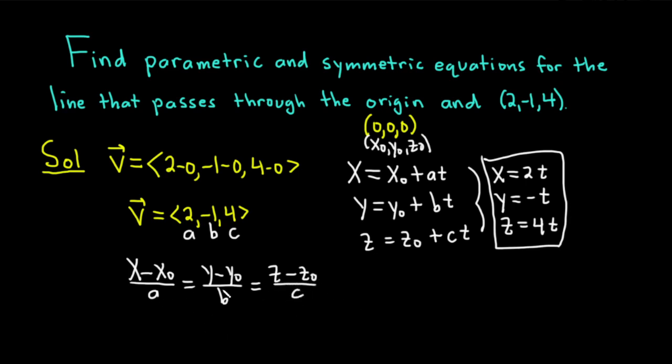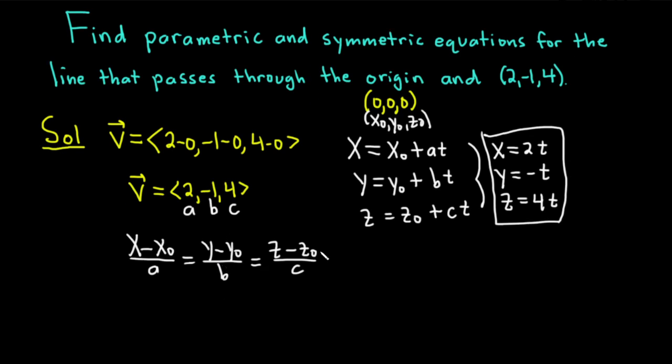So if you plug everything into these equations, since x0, y0, and z0 are all 0, we're just going to get x over a, so x / 2. That's equal to y over b, so y / (-1). And that's equal to z over c, so z / 4. These would be the symmetric equations.